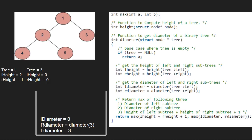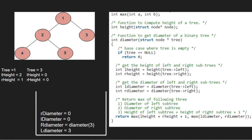Now we find the r_diameter for node 3. Since the right child of 3 is also null, we pass null. As tree is pointing to null, we return 0. So r_diameter will also be equal to 0. Again, we return the max of r_diameter, l_diameter, and l_height plus r_height plus 1. Since all are 0, we return 0 plus 0 plus 1. So r_diameter for node 1 will be equal to 1.